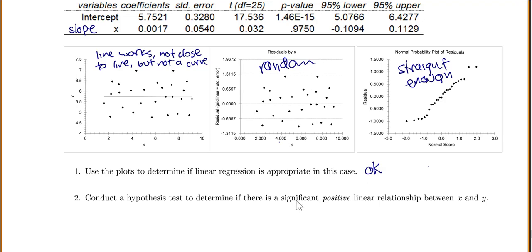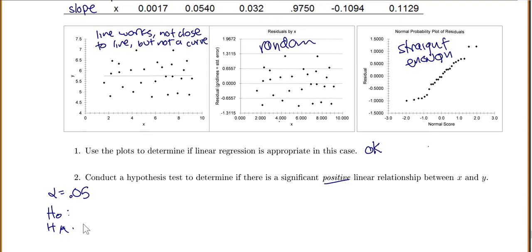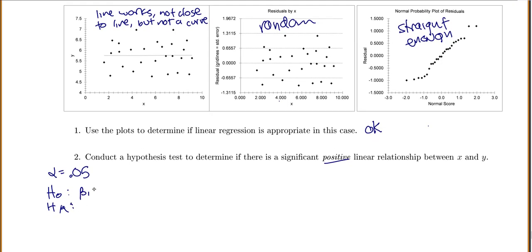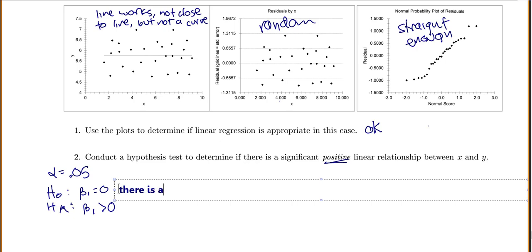Now, let's conduct our hypothesis test to see if there's a significant positive linear relationship between x and y. When we go through, we check our conditions. We pick alpha. I'll just use 0.05. We need our null and alternative hypotheses. The null hypothesis will always be that my slope equals 0, and the alternative, in this case, if we want a positive, we'll do greater than 0. The null means there is not a significant linear relationship between x and y.